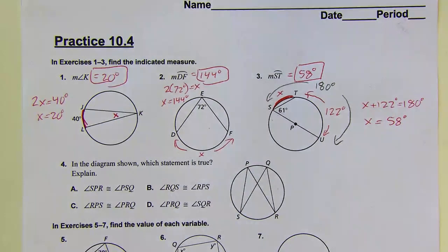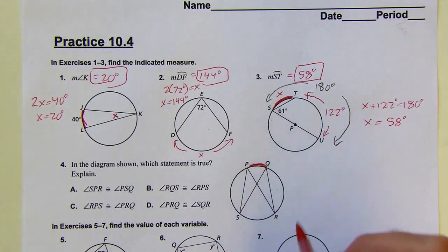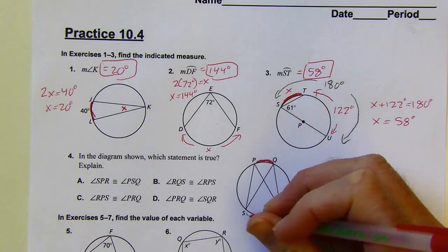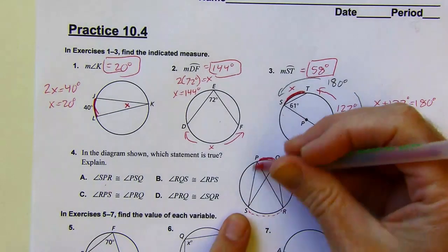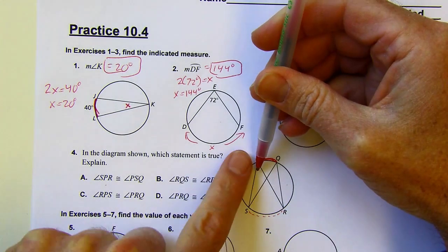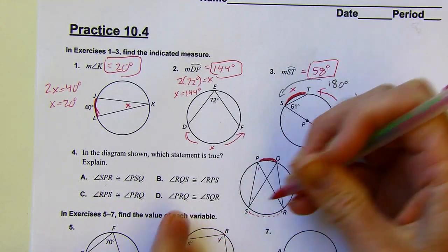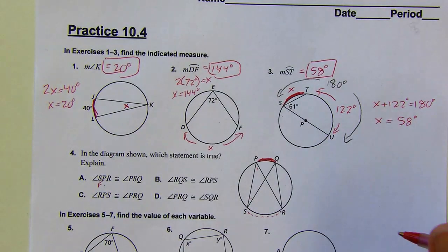Okay, next problem. I've got a multiple choice. In the diagram, which statement is true? So I've got a bunch of inscribed angles in this diagram. If I can find two inscribed angles that intercept the same arc, then they're going to be congruent to each other. I'm looking for one of those. So let's see. Angle SPR and angle PSQ, well, those don't intercept the same arc, so that's a no. They could be congruent, but we don't know based on the info.